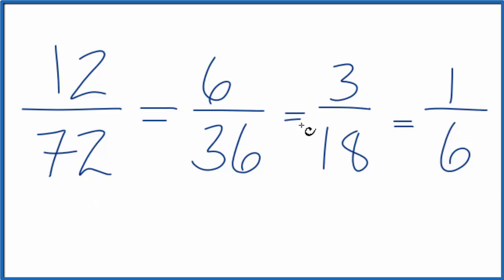And all of these values here, all the fractions here, they're equivalent. They have the same value. If you divided the numerator by the denominator for each fraction here, you get the same answer. But when we simplify 12/72, the lowest terms, the lowest form is 1/6.